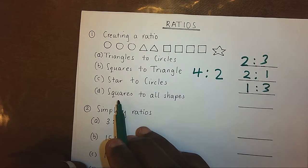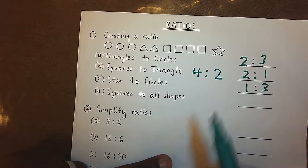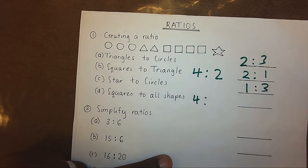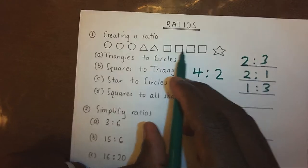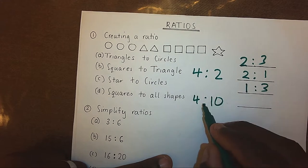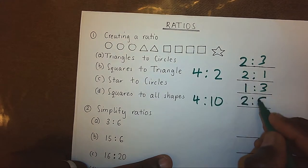Here we have squares to all shapes. If you check, we have 4 squares, and 1, 2, 3, 4, 5, 6, 7, 8, 9, 10 other shapes. Now, if we simplify, we shall get 2 ratio 5.